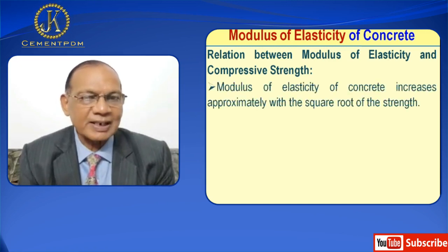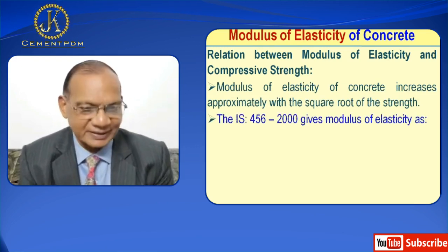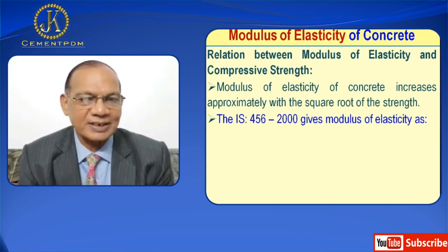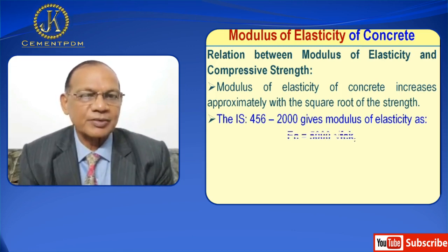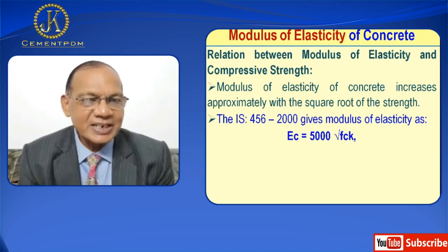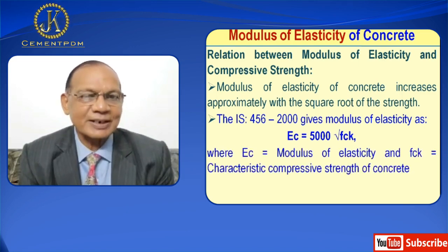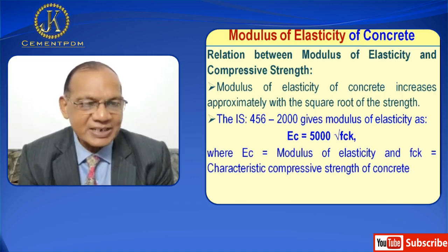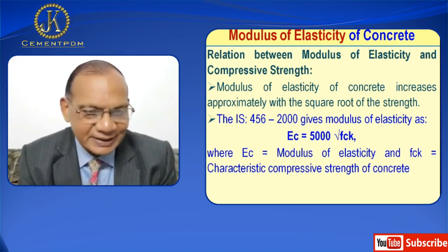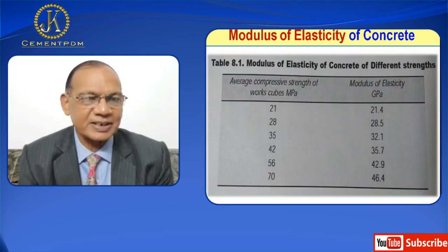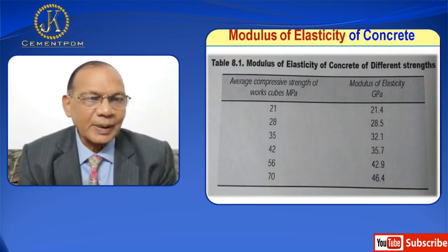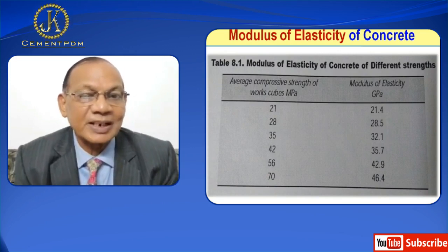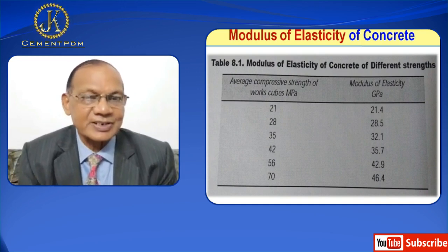Now let us discuss the relation between modulus of elasticity and compressive strength. Modulus of elasticity of concrete increases approximately with the square root of the strength. The IS 456:2000 gives modulus of elasticity as Ec = 5000 × √fck, where Ec is modulus of elasticity and fck is the characteristic compressive strength of concrete. A table showing modulus of elasticity of concrete at different grades can be seen in the video.